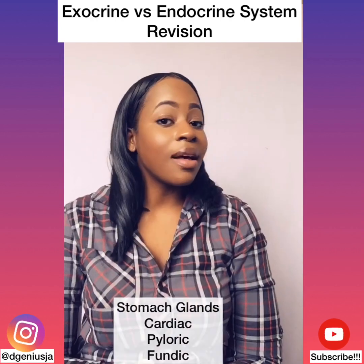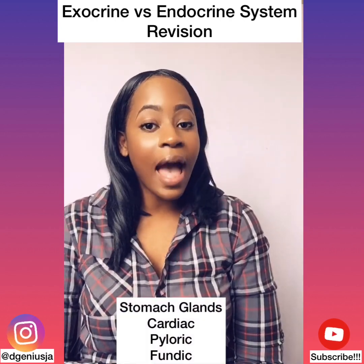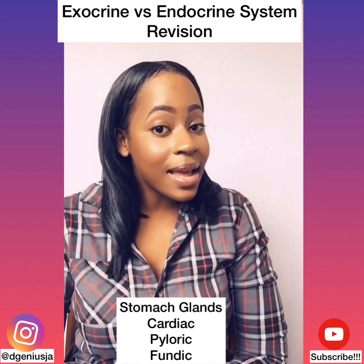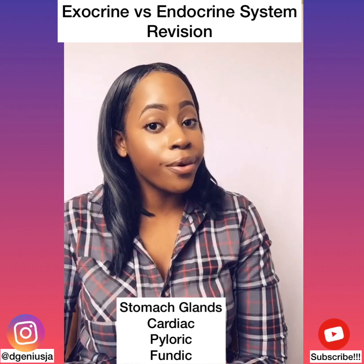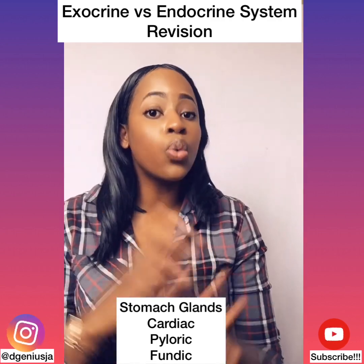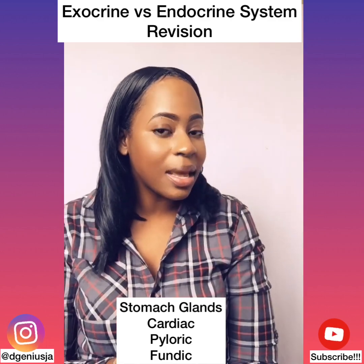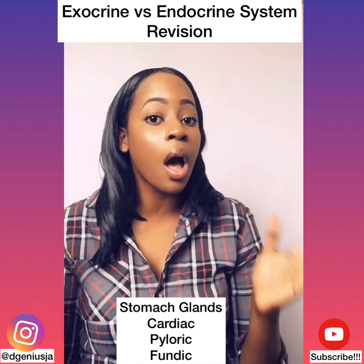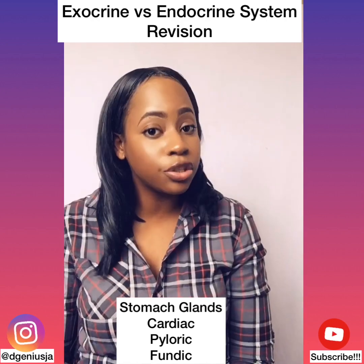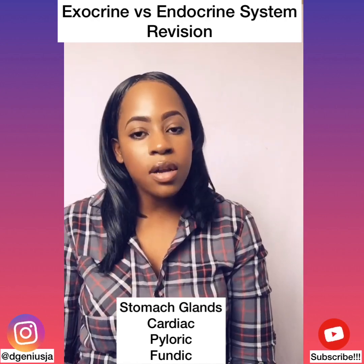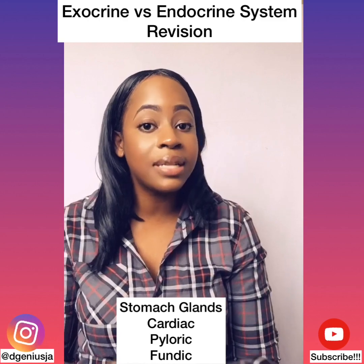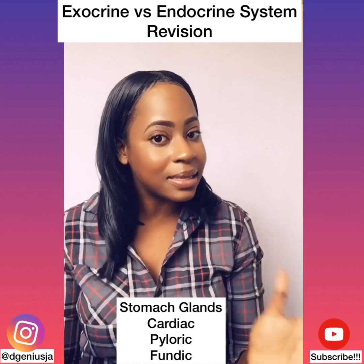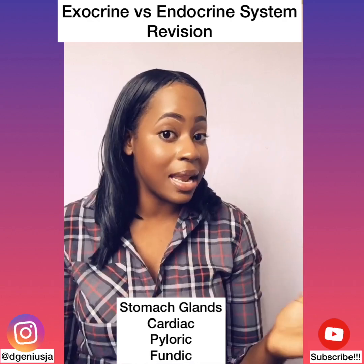Number three, the cardiac, pyloric, and fundic glands in our stomach. The cardiac and pyloric are exocrine glands which secrete mucus into ducts, protecting our stomach lining from the harmful effects of hydrochloric acid. The fundic glands secrete hydrochloric acid and pepsin enzymes, which function in digestion.